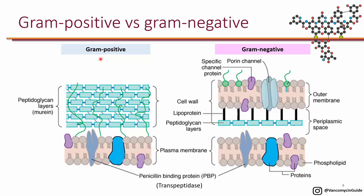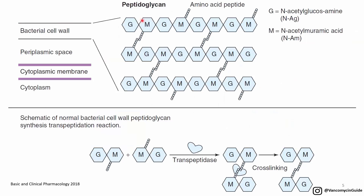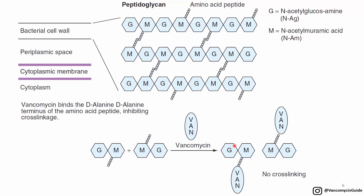Vancomycin only has activity against gram-positive organisms. The peptidoglycan is a mesh of building blocks — N-acetylglucosamine and N-acetylmuramic acid — that cross-link with each other to create this mesh. What vancomycin does is bind to these building blocks and inhibit cross-linking. Because there will be no cross-linking, there will be no peptidoglycan layer formed.